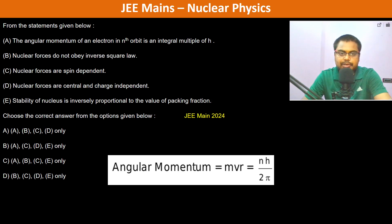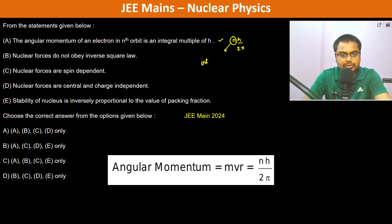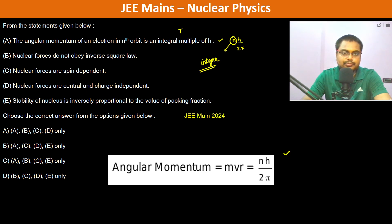The angular momentum of an electron in the nth orbit is an integral multiple of h. So basically mvr = nh/2π, where n is an integer. As mentioned, mvr = nh/2π — this is true.